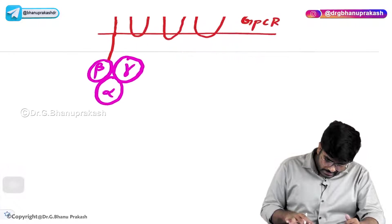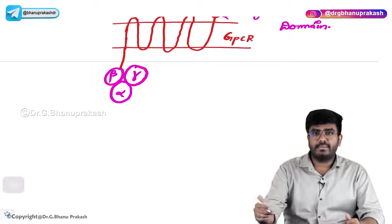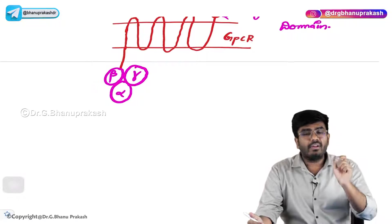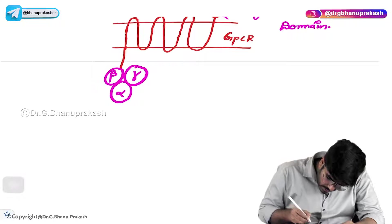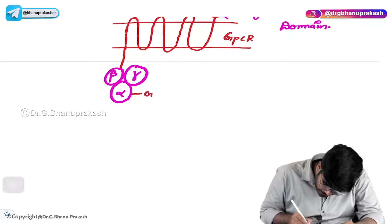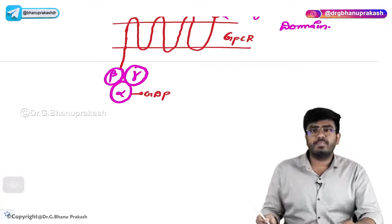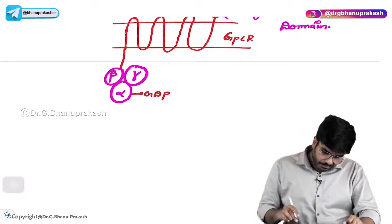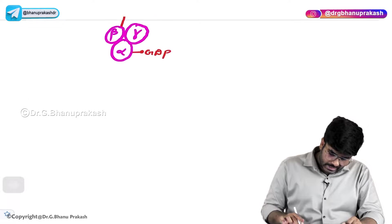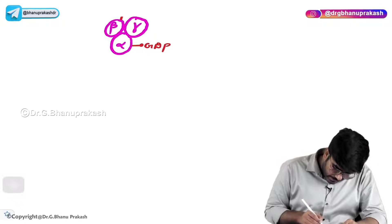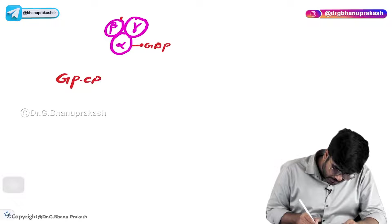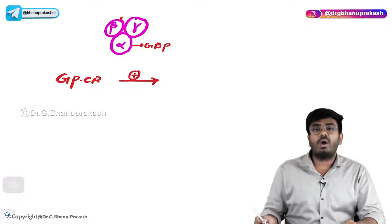Now an important point is about the alpha subunit. Whenever the receptor is not active, the alpha subunit is bound to GDP. Now, whenever this GPCR — the G protein coupled receptor — is activated, what will happen?